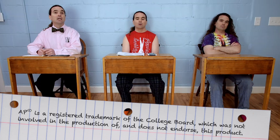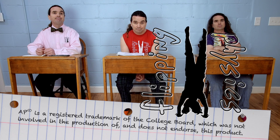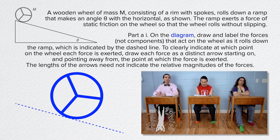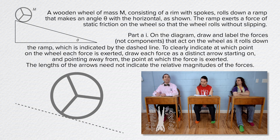A wooden wheel of mass M consisting of a rim with spokes rolls down a ramp that makes an angle theta with the horizontal as shown. The ramp exerts a force of static friction on the wheel so that the wheel rolls without slipping. Part A-i: on the diagram, draw and label the forces — not components — that act on the wheel as it rolls down the ramp, indicated by the dashed line. To clearly indicate at which point on the wheel each force is exerted, draw each force as a distinct arrow starting on and pointing away from the point at which the force is exerted. The lengths of the arrows need not indicate the relative magnitudes of the forces.